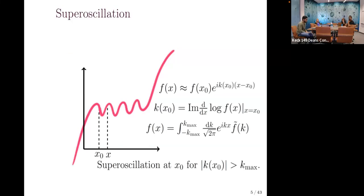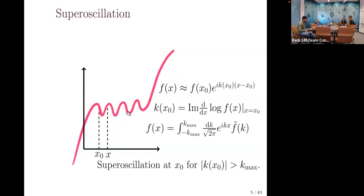This illustrates the concept. Considering two nearby points x₀ and x, the function at x can be approximated as the function at x₀ multiplied by some phase — to first order, it's like a local wave vector guiding how the function oscillates locally. The local wave number at x₀ is the imaginary part of the logarithmic derivative of the function. We say the function is super-oscillating at x₀ if this local wave number kx₀ is greater than the bandwidth k_max.